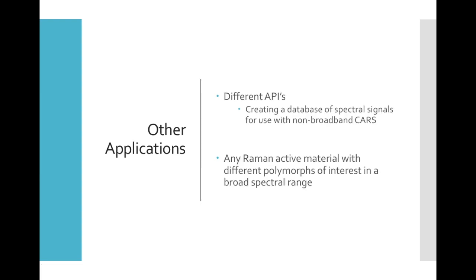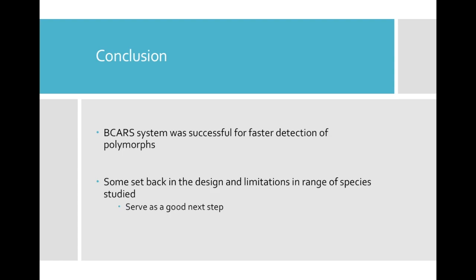The limitations could also point to further applications. Looking at different APIs might be very effective and could produce a database of spectral signals for drugs to use when investigating a narrow signal of interest with regular CARS microscopy. B-CARS could also be used for any Raman-active material with polymorphs that you want to analyze and get ratios of quickly and efficiently. This paper did show that B-CARS is significantly faster with a wide range of signal detection, and while there are some drawbacks, these could be the next avenue of research for the B-CARS microscopy characterization method.